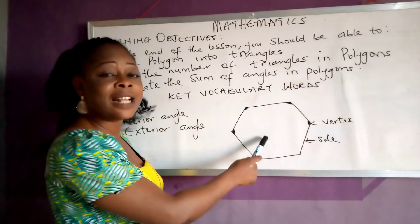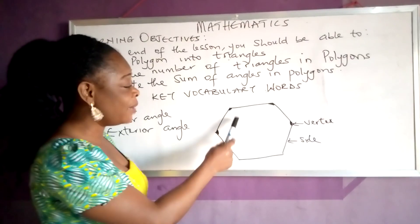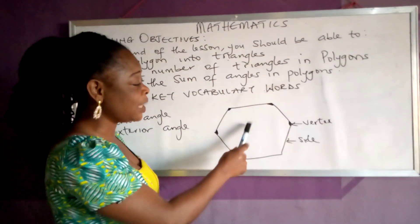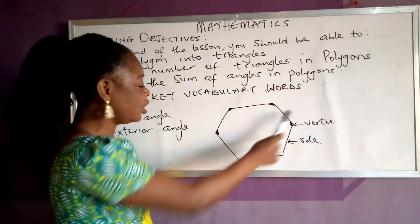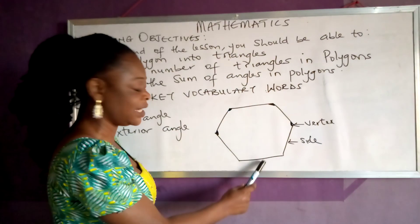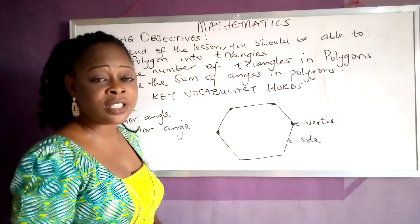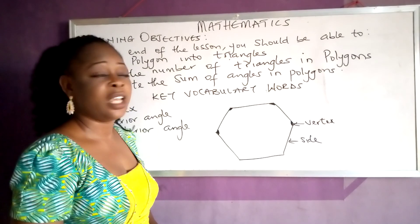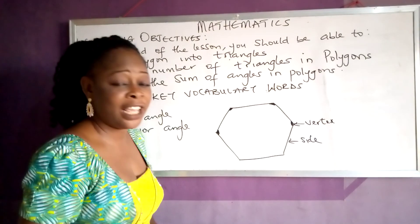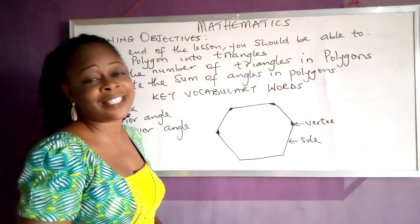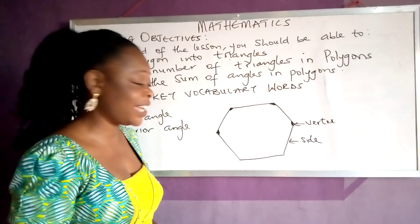Now, look at this shape. How many sides does this polygon have? Let's count: one, two, three, four, five, six. A shape with six sides is called a hexagon. We call it a hexagon.